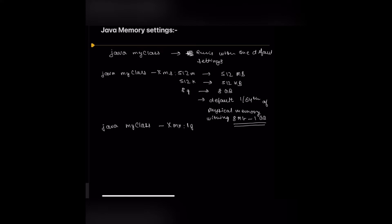-Xmx is used to configure the maximum heap size. For example, we can configure the maximum heap size as 1 GB, and we can configure it in KB, MB, or GB, just as shown for the minimum heap size example. Using this parameter we can govern the maximum heap size. The default value for maximum heap size is half or one-fourth of the physical memory, depending on the physical memory available.